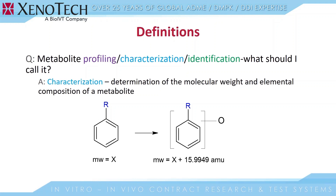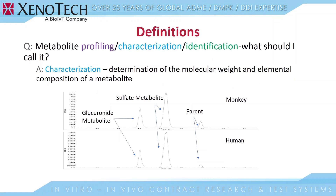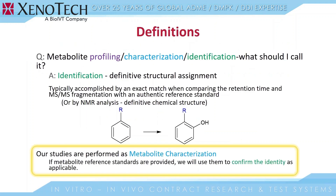In terms of characterization, it's generally understood that this is the determination of the molecular weight and elemental composition of a metabolite. This is typically done by mass spec techniques — we use LC-MS analysis at Sekisui Xenotech. Now metabolite one and metabolite two have more definition: we can say metabolite one is a glucuronide and metabolite two is a sulfate. Identification is a definitive structural assignment, typically accomplished by matching retention time and mass spec fragmentation with an authentic reference standard, or by NMR analysis, which gives a definitive chemical structure — specifically showing the location of the hydroxyl group on the ring.